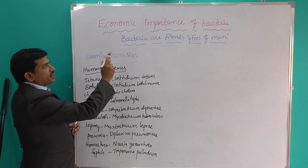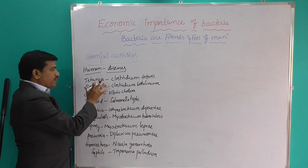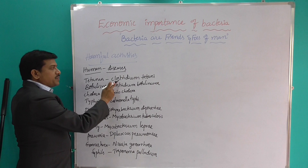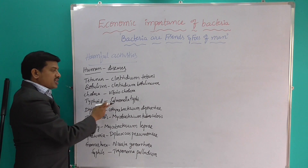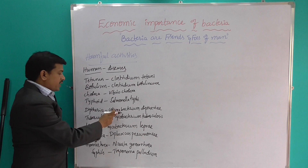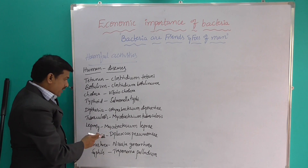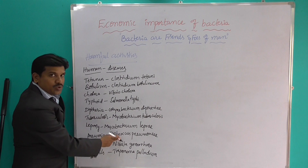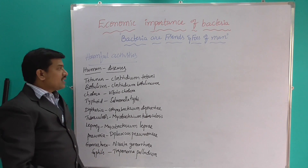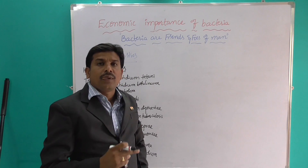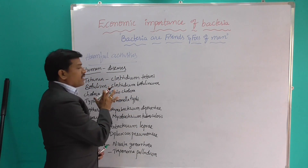Bacteria infect humans causing different diseases. Especially: tetanus — Clostridium tetani; botulism — Clostridium botulinum; cholera — Vibrio cholerae; typhoid — Salmonella typhi; diphtheria — Corynebacterium diphtheriae; tuberculosis — Mycobacterium tuberculosis; leprosy — Mycobacterium leprae; pneumonia — Diplococcus pneumoniae; gonorrhea — Neisseria gonorrhoeae; and syphilis — Treponema pallidum. So different diseases are caused and bacteria are very harmful.